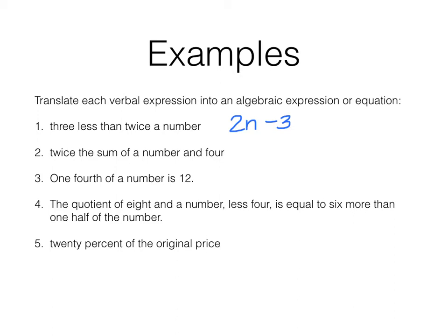Second one, twice the sum of a number and four. Okay, twice the sum. So what are we multiplying by two? Is it the number, the four? No, we're multiplying a sum. So let's write the sum first. There's the sum of a number and four. If I want to multiply that by two, my two has to go on the outside. So it looks quite a bit different.